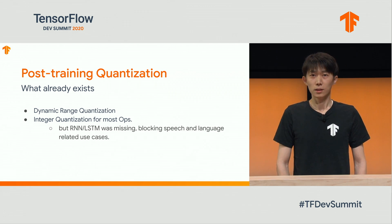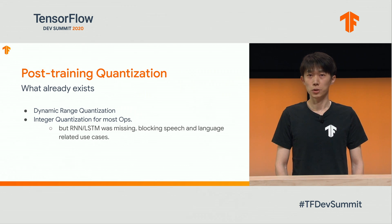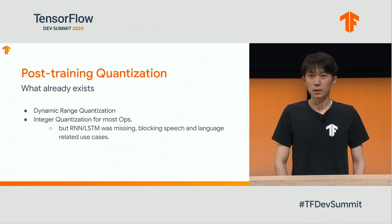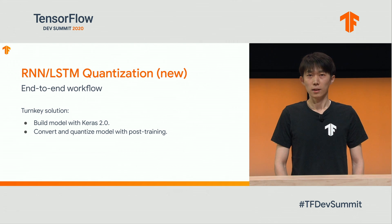Now let's have an operator-level breakdown on post-training quantization. Dynamic range quantization is fully supported, and integer quantization is supported for most operators. The missing piece is recurrent neural network support, which blocks use cases such as speech and language where context is needed. To unblock those use cases, we have recently added RNN quantization and built a turnkey solution through the post-training API. Models built with Keras 2.0 can be converted and quantized with the post-training API.